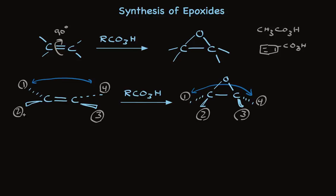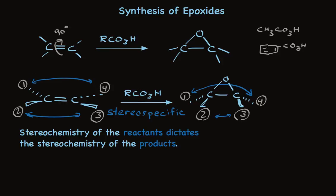The 1 and 4 substituents are both back in the starting material and are both back in the product. And the 2 and 3 are both toward us in each structure. So the stereochemistry of the alkene is maintained in the stereochemistry of the product. This is a stereochemical result called stereospecific. The definition of stereospecific is that the stereochemistry of the reactants — the alkene in this case — dictates the stereochemistry of the products.